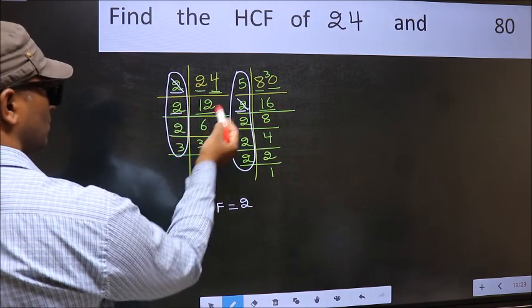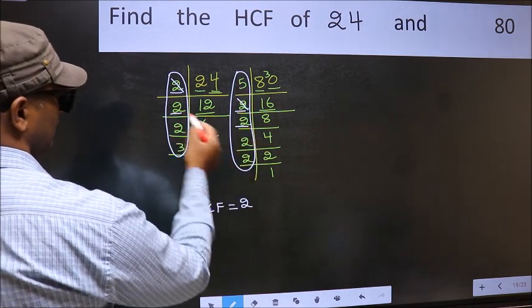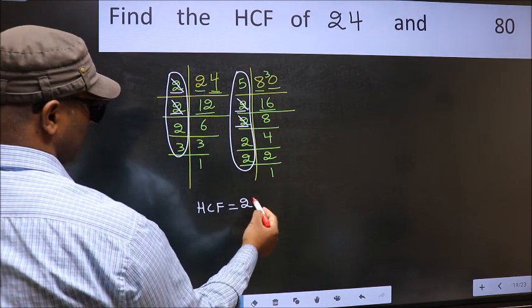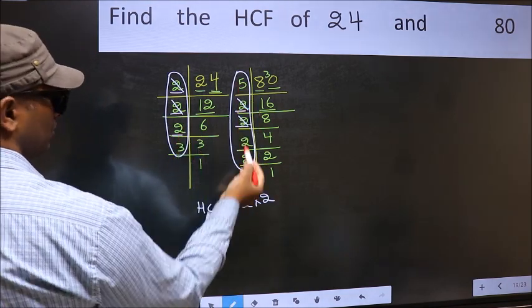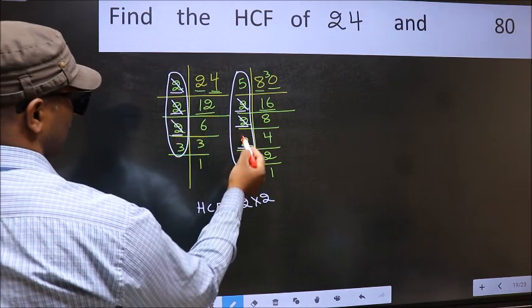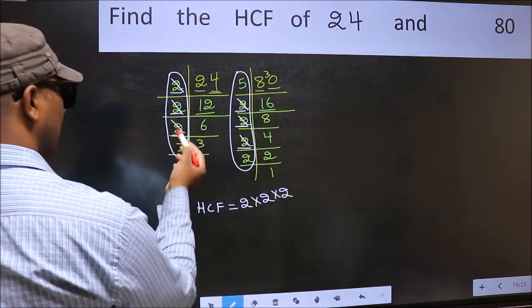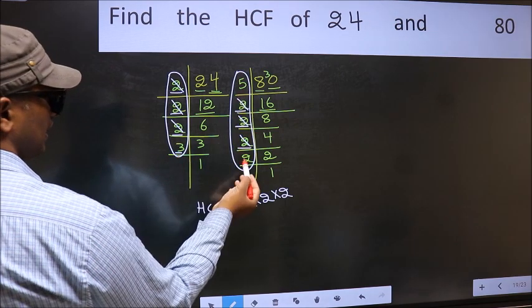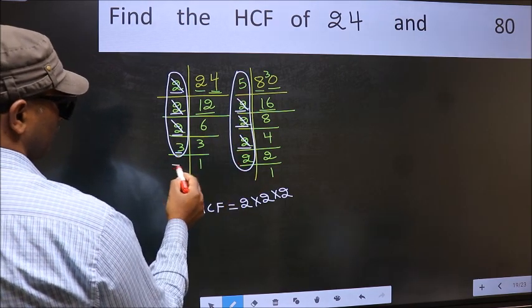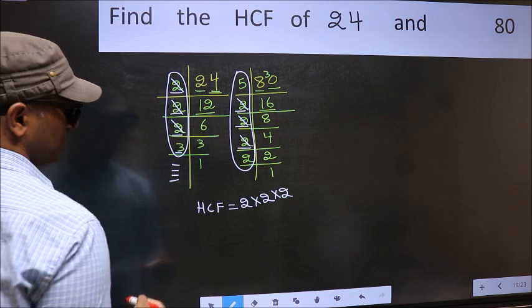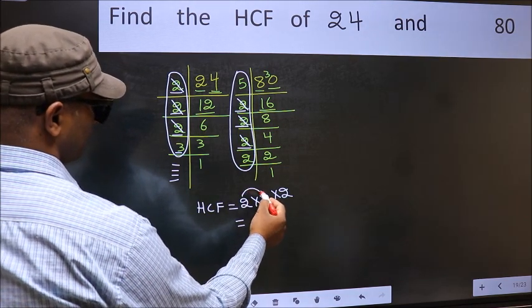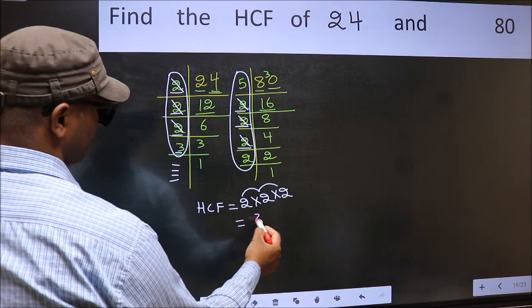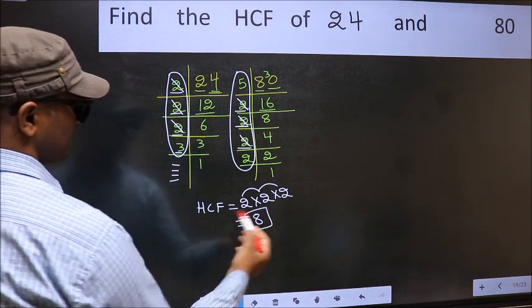So cut 2 right here. Next number 2. Do we have 2 here? Yes. So cut 2 right here. Next number 3. Do we have 3 here? No. No more numbers have been left out. So our HCF is 2 times 2 is 4, 4 times 2 is 8 is our HCF.